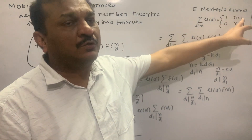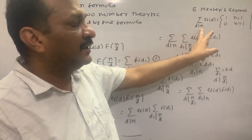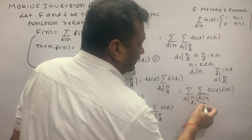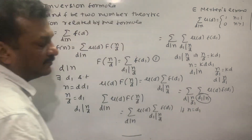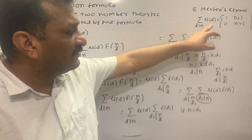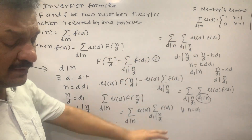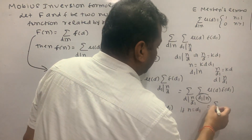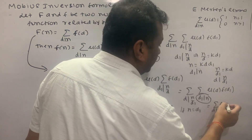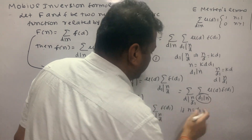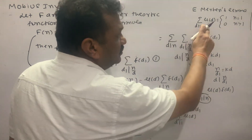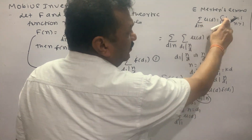Now we apply the Möbius lemma proved earlier: summation over d dividing n of μ(d) equals 1 if n equals 1, and 0 if n is greater than 1. So in the inner summation over d dividing n/d₁, we apply this property. If n equals d₁, then summation over d dividing 1 of μ(d) equals 1.